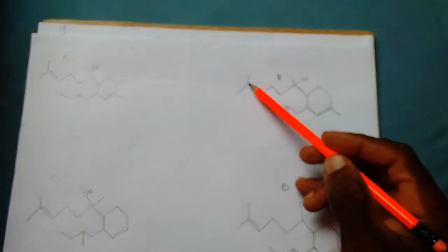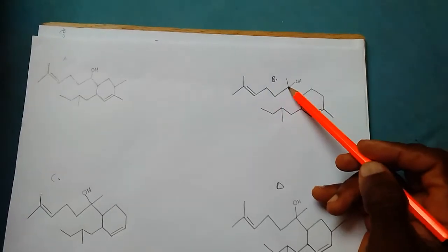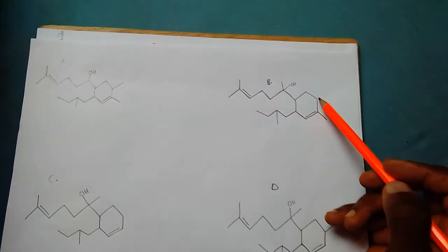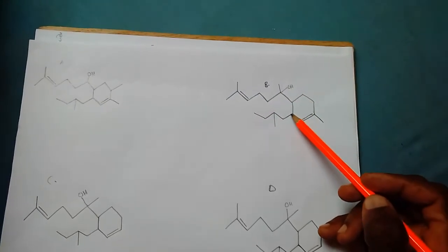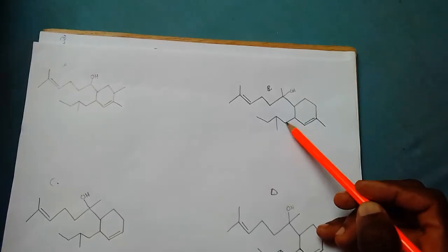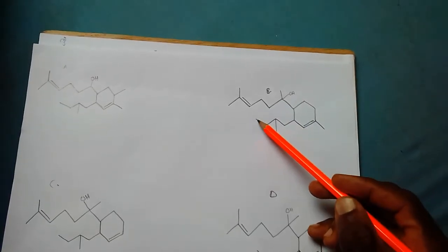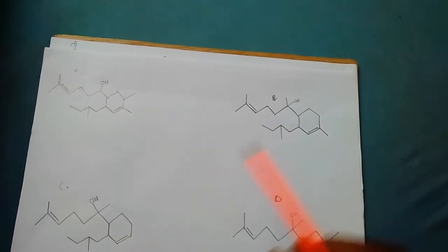Let's come to compound B: 1, 2, 3, 4, 5, 6, 7, 8, 9, 10, 11, 12, 13, 14, 15, 16, 17, 18, 19, 20. This one too is likely to be a terpene. Now compound C: 1, 2, 3, 4, 5, 6, 7, 8, 9, 10, 11, 12, 13, 14, 15, 16, 17, 18, 19. So C is automatically not a terpene.